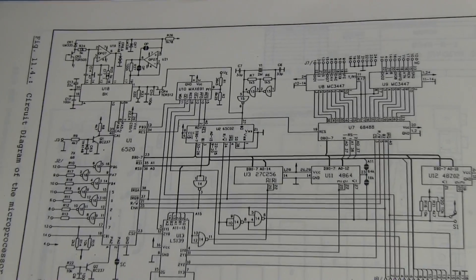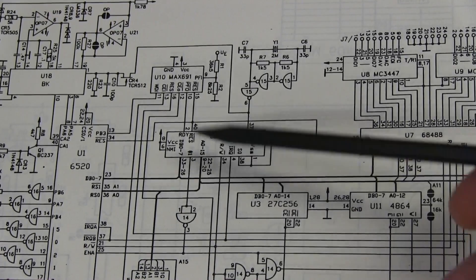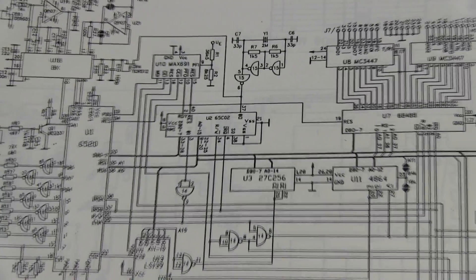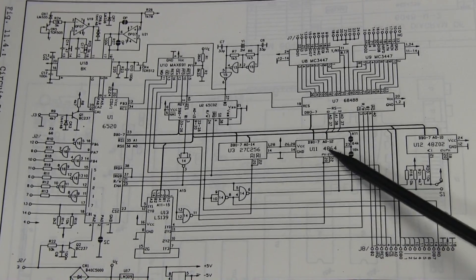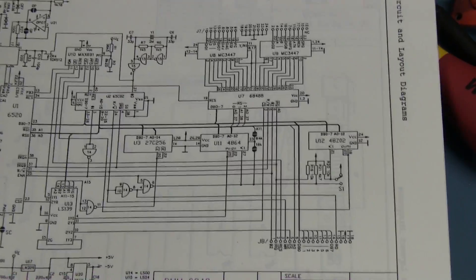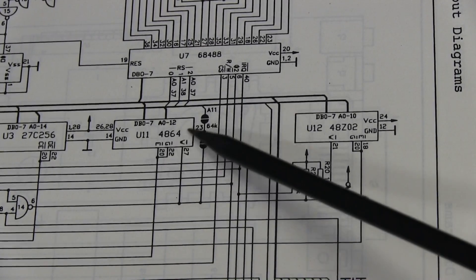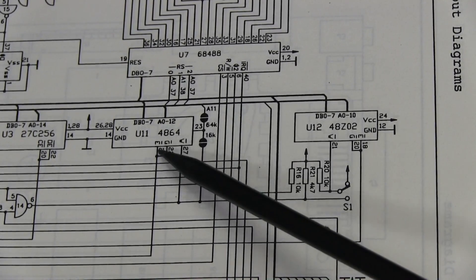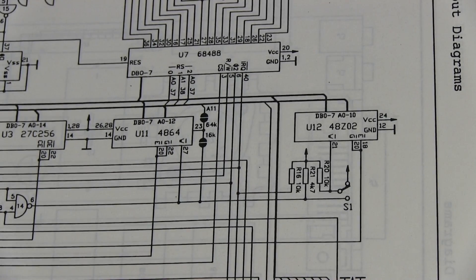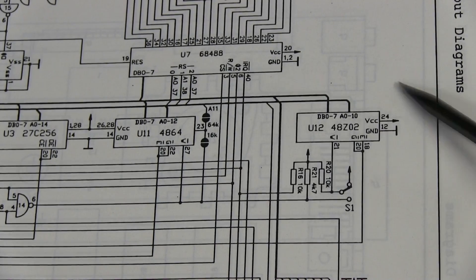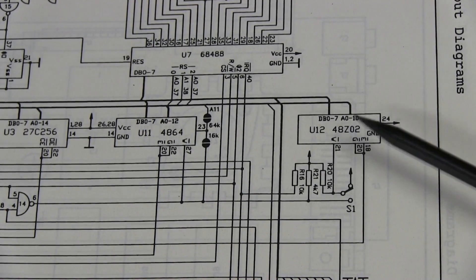Here's the schematic of the main processor. You can see the 65C02, they've drawn it tiny because they've got just the parallel data buses. They've got the EEPROM, the main SRAM, and here, U12, is the battery-backed Dallas real-time clock chip. Basically it's pin-for-pin compatible with a regular SRAM chip of the same size except it's got a built-in lithium primary battery.